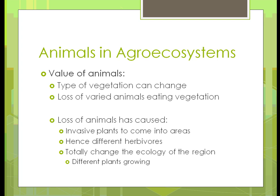That loss of animals on individual farms has resulted in invasive plants coming into areas because the animals aren't eating down or stomping down the pasture lands. What functions as herbivores — the things that eat or control plants — is now different because different plants are growing, changing the ecology of that region and resulting in different plants moving in.